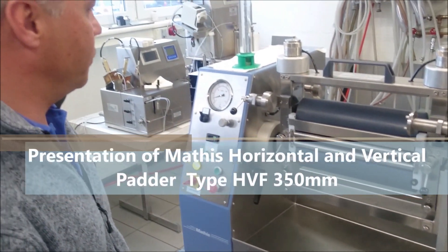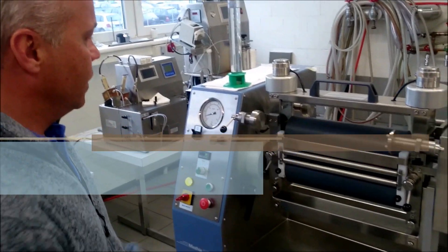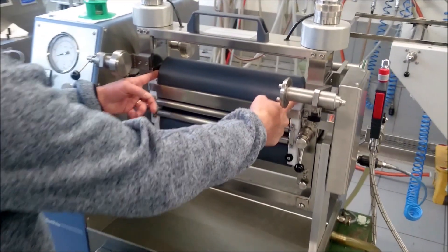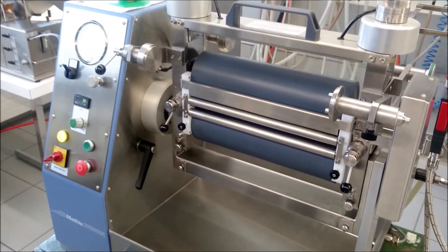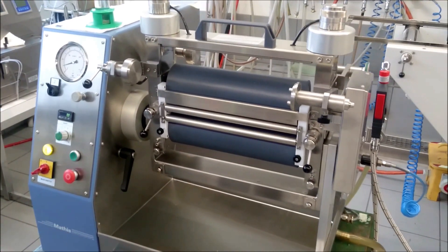Three possibilities work with the Mattis Adderer HVF. This size is 350mm. It's possible to work with samples about A4. It means 300mm.